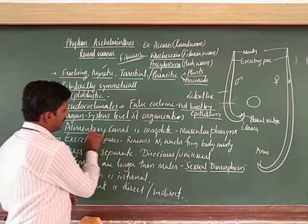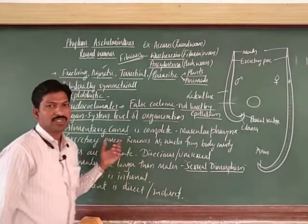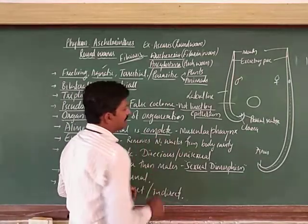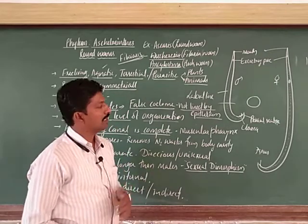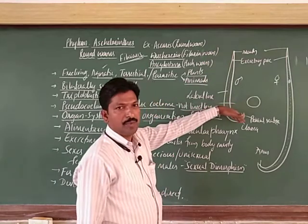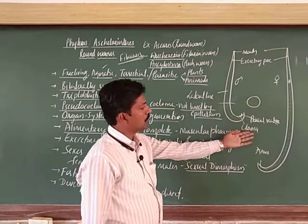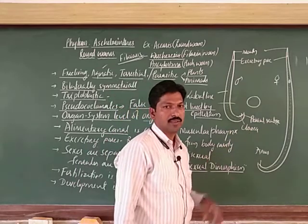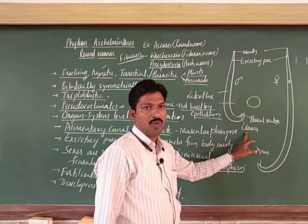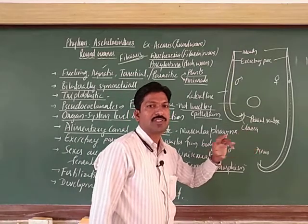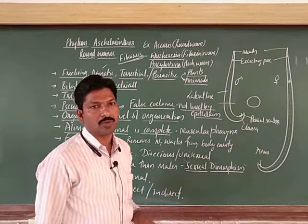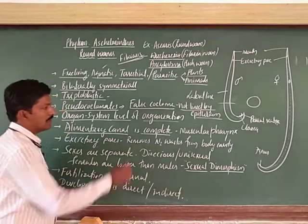The alimentary canal — also called the digestive tract — is complete here. The mouth and anus are at opposite ends: the mouth is at the anterior side, and the anus is at the posterior side. The anus may also be called cloaca because both pores — excretory as well as egestion — are together, forming a common opening.